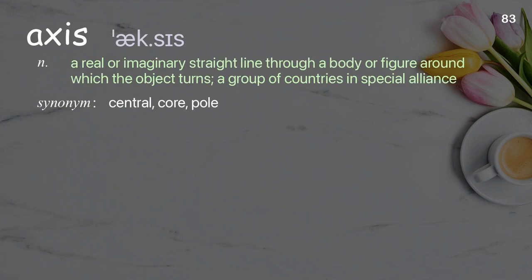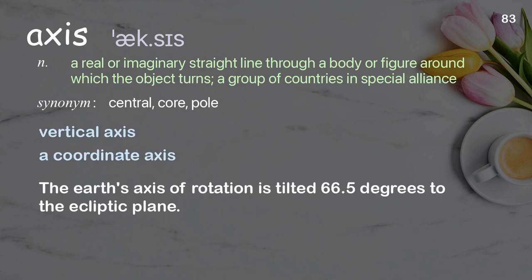Axis: a real or imaginary straight line through a body or figure around which the object turns; a group of countries in special alliance. Examples: vertical axis, a coordinate axis. The Earth's axis of rotation is tilted 66.5 degrees to the ecliptic plane.